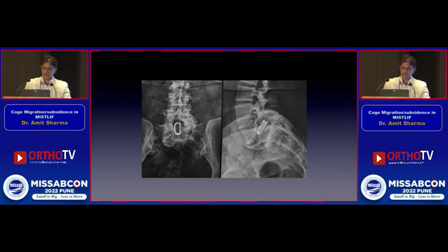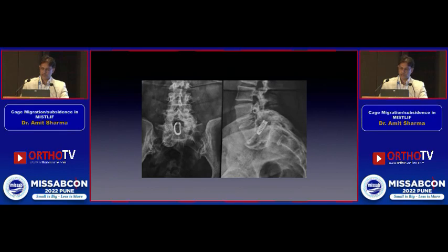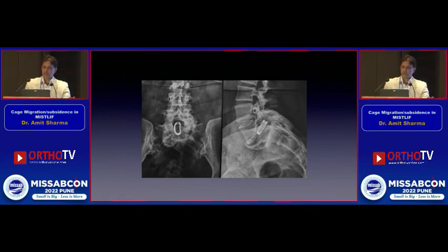We performed bilateral L5 and S1 nerve root decompression. The fusion had already taken place — we couldn't break it to remove the cage. The loose screws were removed since fusion had likely occurred after the screws loosened, and the cage was left in situ.